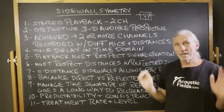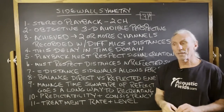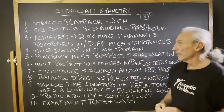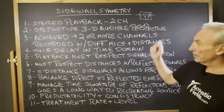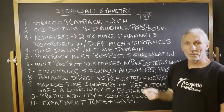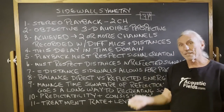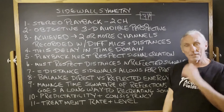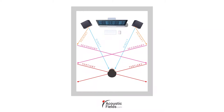That primary reflection, which we're all familiar with and we've all heard about, is critical. But we also have the secondary and the tertiary, as you can see in this graphic here. That sidewall distance — we have to have balance.